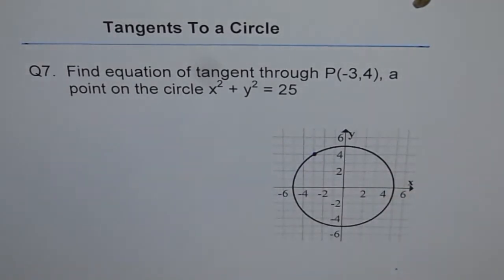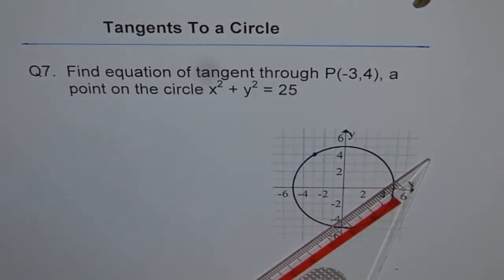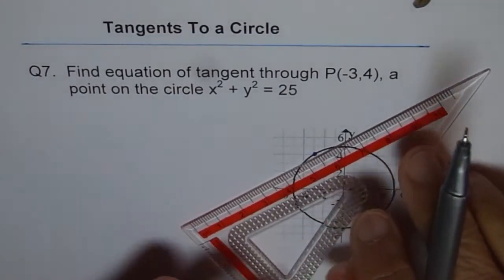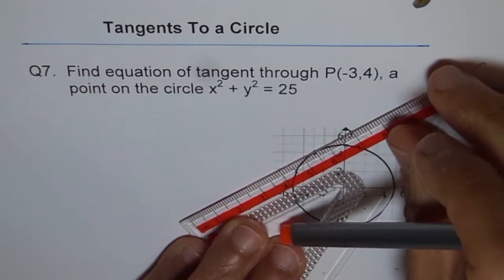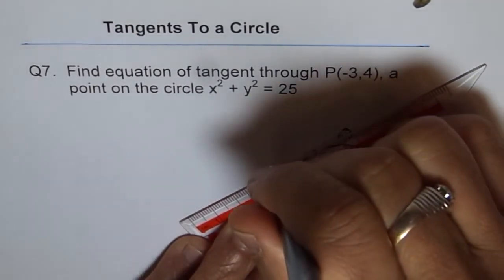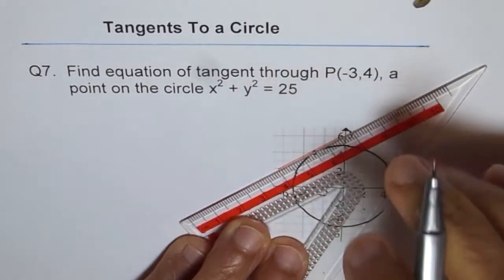So let's sketch. Let's draw our tangent here at (-3, 4). So it will be kind of like this.